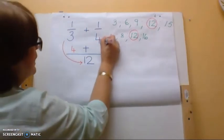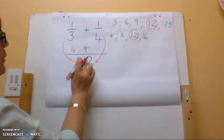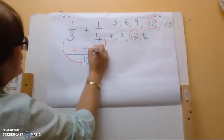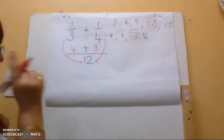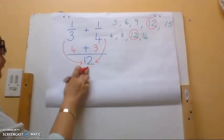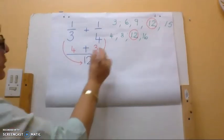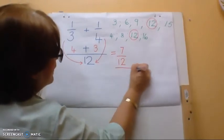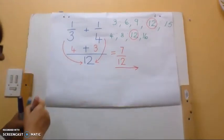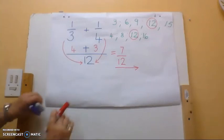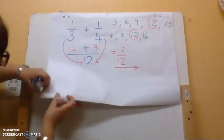Then four will divide into 12 three times; three times one is three, so that gives me three twelfths. Because they both have the same denominators I can add them: four twelfths plus three twelfths gives me 7 over 12. And I ask myself — is it in its simplest form? Yes it is, so I can leave it like that.